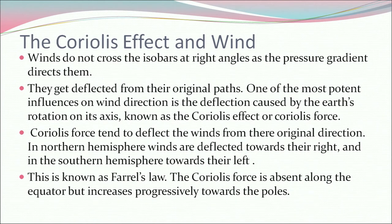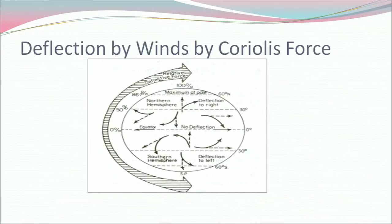The Coriolis effect and wind: winds do not cross the isobars at right angles as the pressure gradient directs — they get deflected from their original path. One of the most potent influences on wind direction is the deflection caused by the earth's rotation on its axis, known as the Coriolis effect or Coriolis force. The Coriolis force tends to deflect winds from their original direction. In the northern hemisphere, winds are deflected towards their right, and in the southern hemisphere towards their left. This is known as Ferrell's law. The Coriolis force is absent along the equator but increases progressively towards the poles.